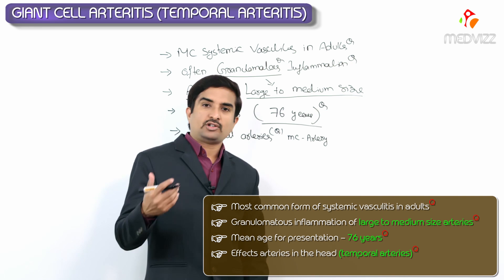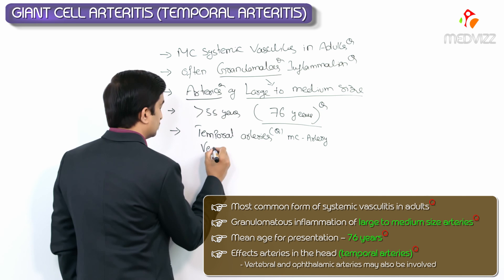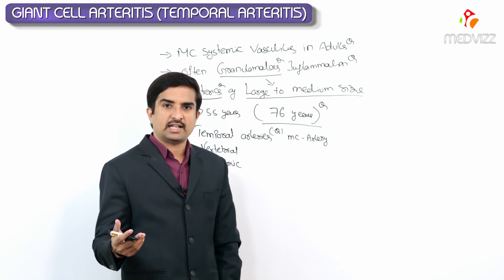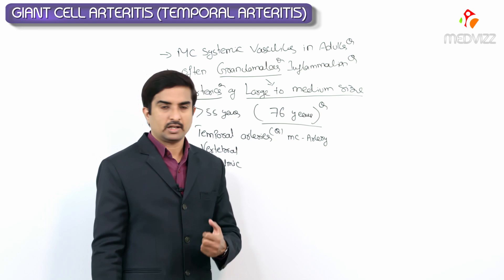Other arteries involved in Giant Cell Arteritis include the vertebral arteries and the ophthalmic arteries. In the most severe cases, blindness is seen because of involvement of the ophthalmic arteries.